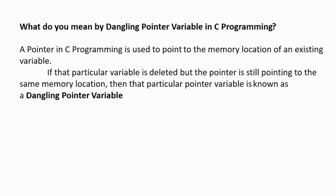Next question: what do you mean by a dangling pointer variable in C programming? A pointer in C is used to point to the memory location of an existing variable. If that particular variable is deleted but the pointer is still pointing to the same memory location, then that pointer variable is known as a dangling pointer variable.